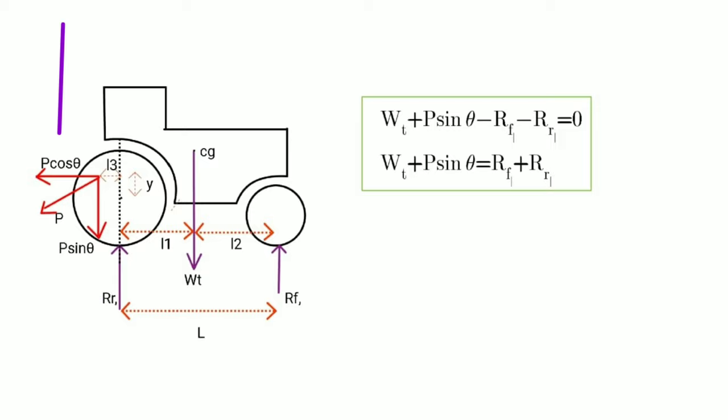Pull P has horizontal and vertical components. The summation of all vertical forces should be zero. There are two forces that add weight on wheels: self weight of tractor and vertical component of pull. When we take summation of all vertical forces, we obtain equation as follows: Wt plus P sin theta equals RF dash plus RR dash. It indicates that vertical component of pull adds weight on wheels of tractor.